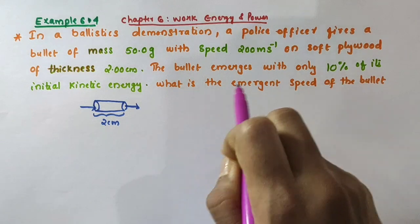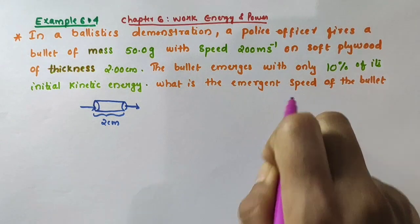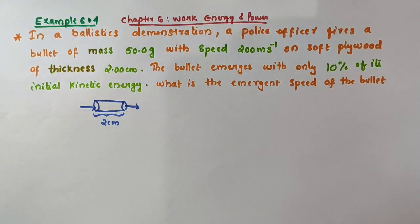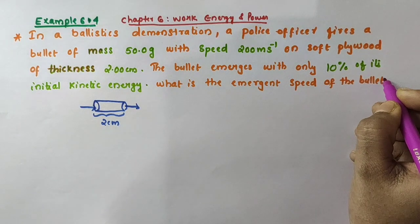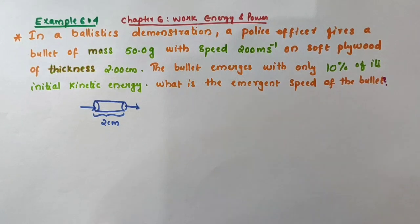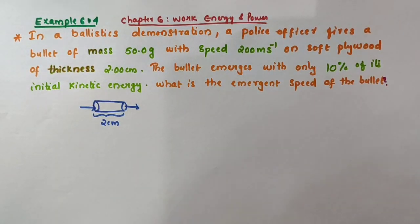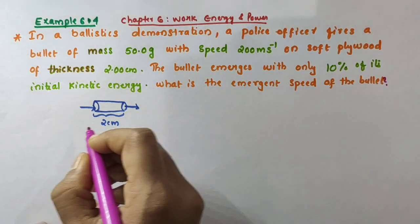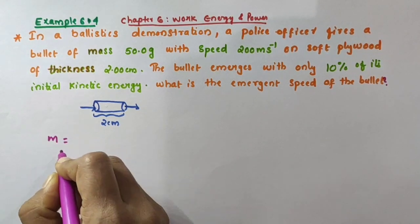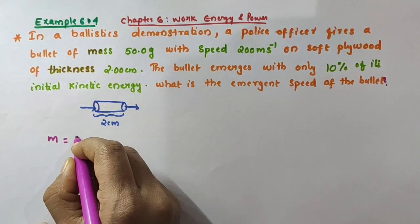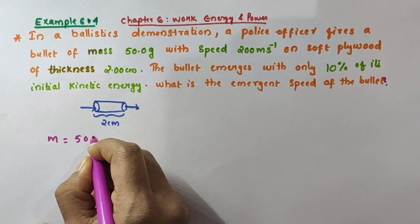We want to calculate the emergent speed of the bullet — that is the question. So how can we calculate that? We can make use of the concept of kinetic energy here. The mass of the bullet is given as m. Let it be m, equal to 50 grams.